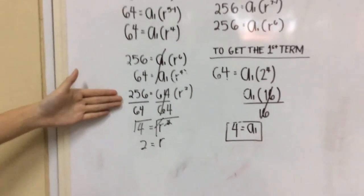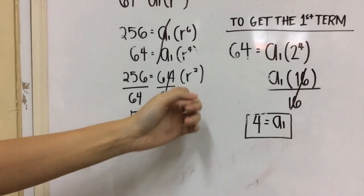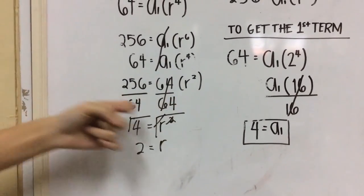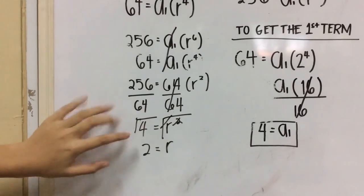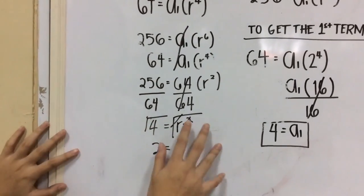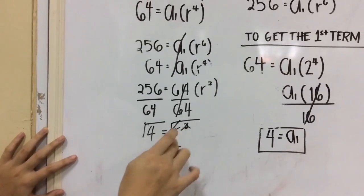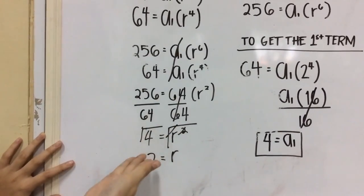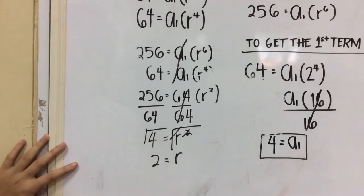And then, after that, we will divide each by 64. And then, we will get 4 equals R raised to 2. And then, we will cancel out the square with a square. And we will get 2 equals R.